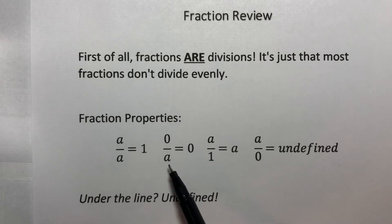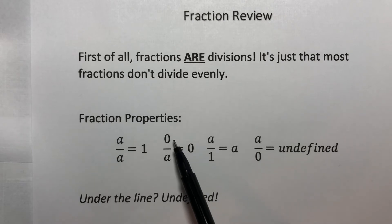If you have zero over anything, it's zero. Zero divided by anything is zero. Zero divided by four is zero, zero divided by 400 is zero, always.